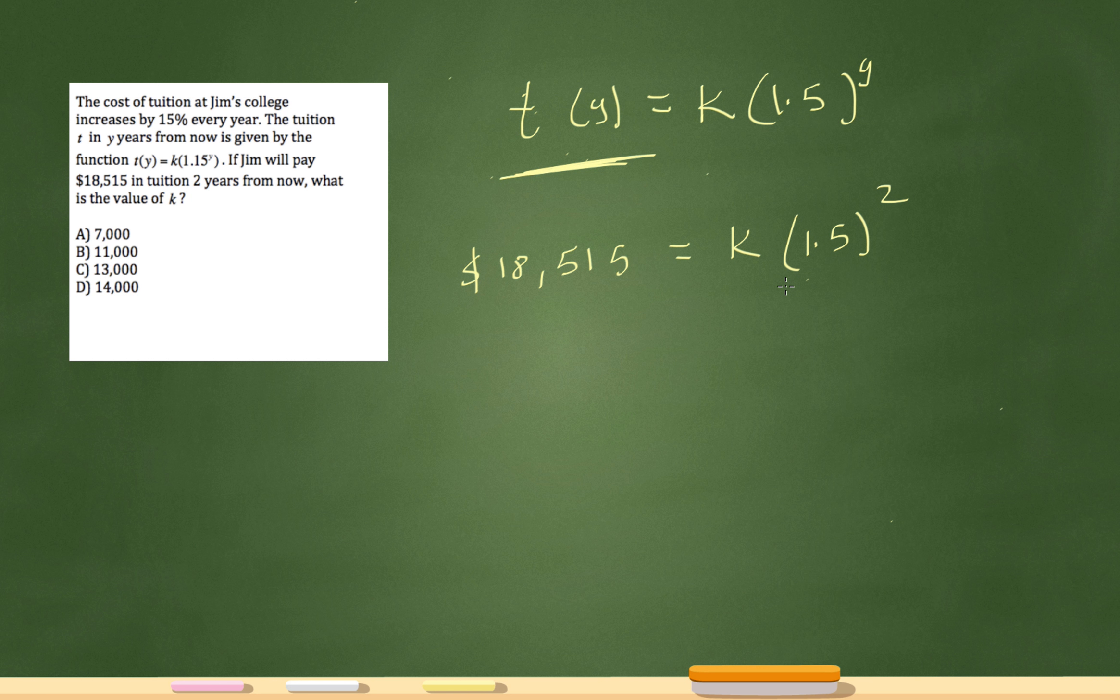So it's 1.5 squared. 1.5 squared will be 2.25. So I'm going to rewrite that as 2.25k equals $18,515. And now let's just do $18,515 divided by 2.25, and k will be...